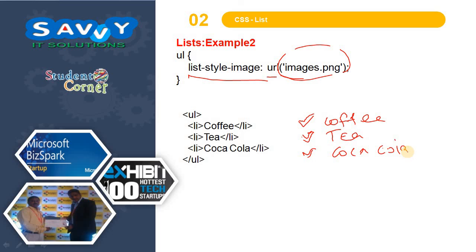This is the way lists are working. In this video we learned about links and lists. For links, we changed the actual default colors, applied text decoration changes, and set background colors. For lists, we changed images as well as symbols using classes for ordered and unordered lists. In the next video we will learn this in a practical way, explaining the practicals in detail for better understanding of the concept.